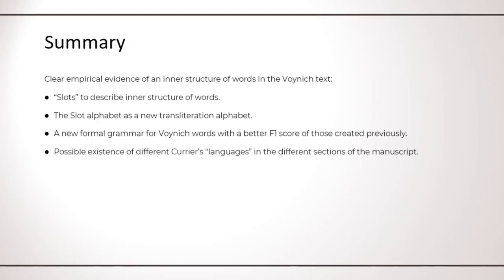I hope in this presentation I managed to show you how there is a clear empirical evidence of an inner structure of words in the Voynich text, which is captured here with the concept of slots. I also proposed the slot alphabet as a new transliteration alphabet and argued how the slot model and the slot alphabet can be new useful tools to analyze the Voynich by creating a formal grammar of Voynich words, which are then used to provide some hopefully new and interesting insights on the manuscript, namely the existence of different languages in the different sections.